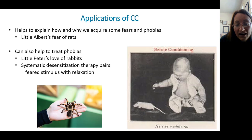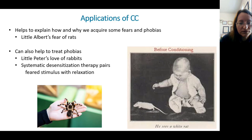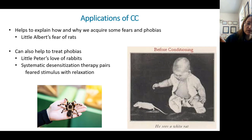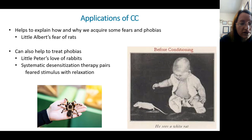Classical conditioning helps explain how we can acquire some fears and phobias. In the famous Little Albert experiment, researchers taught Little Albert to fear rats — which he was not scared of initially — by pairing the presentation of the rat with a loud sound, striking a bar behind his head. After a few pairings, he cried as soon as he saw the rat.